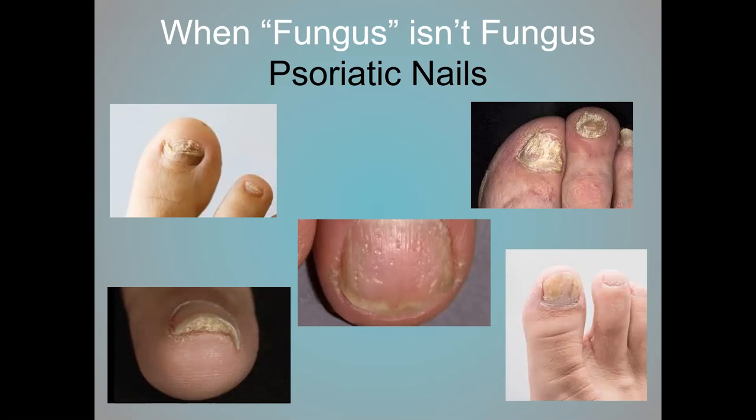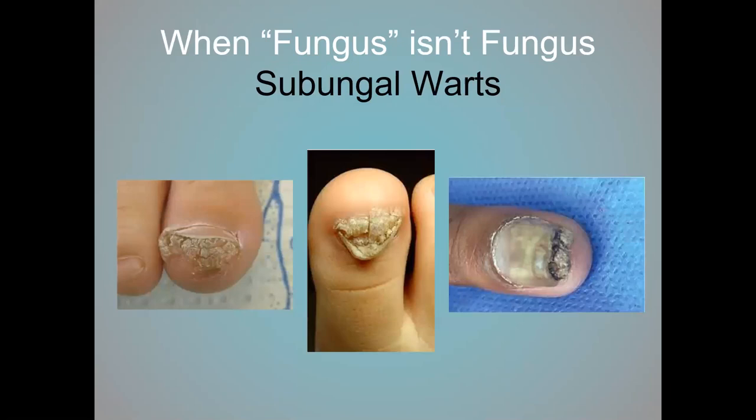When is fungus not fungus? Many cases are not actually fungus, and they often don't respond to antifungal medication as a result. Examples include psoriatic nails — pitting is usually one of the first presentations, but they can progress to look just like fungal nails. You can also have warts underneath the nail; when a wart is underneath the nail, it often looks like a keratinized nail bed. The color can be yellow or black, and fungus can also present as yellow or black, making it difficult to distinguish between a wart and fungus.